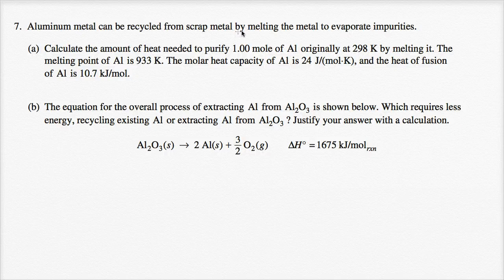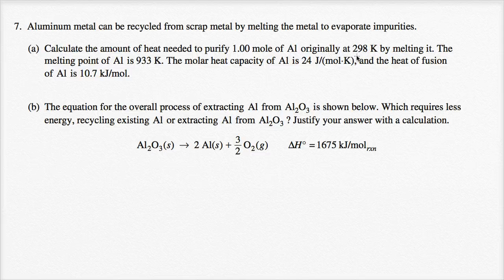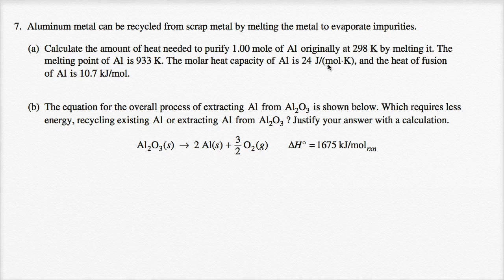Aluminum metal can be recycled from scrap metal by melting the metal to evaporate impurities. Calculate the amount of heat needed to purify one mole of aluminum originally at 298 Kelvin by melting it. The melting point of aluminum is 933 Kelvin, the molar heat capacity is 24 joules per mole Kelvin, and the heat of fusion is 10.7 kilojoules per mole.